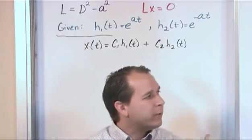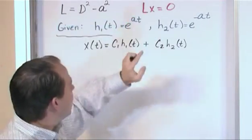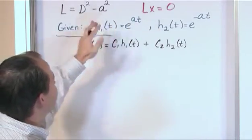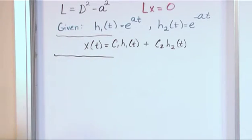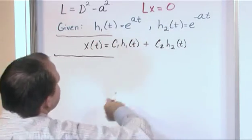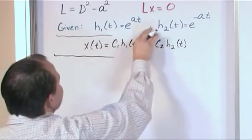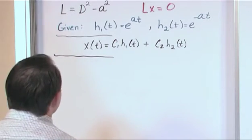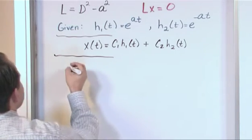The Wronskian test is exactly for that purpose — to prove that they're linearly independent. We also learned that even though this full solution satisfies the differential equation, each individual h function should also satisfy the equation. So part one of this problem is to show — and this is a great test problem — you're given a differential equation, given h1 and h2, and the first part says: prove or show that these functions are solutions of the differential equation.